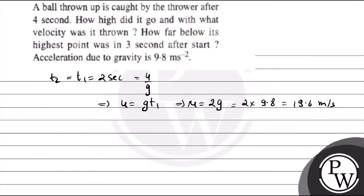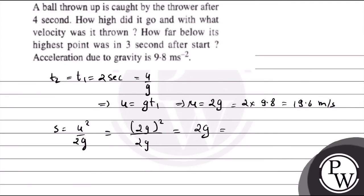So our initial velocity is 19.6 m/s. Now we have to find how high it went. Our height S = U²/2G = (2G)² / 2G = 2G = 2 × 9.8 = 19.6 meters.